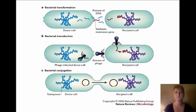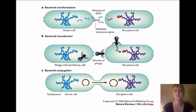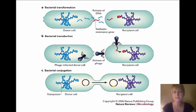There are also other methods of reproduction in bacteria. The first is bacterial transformation. What happens here is there might be a mutation in the DNA of the bacteria, that DNA is released, and it's taken up by a recipient cell — basically moving from one cell to another, changing the genetics.